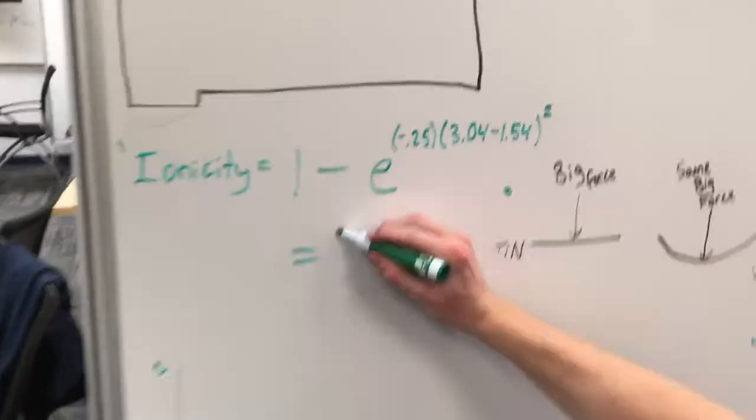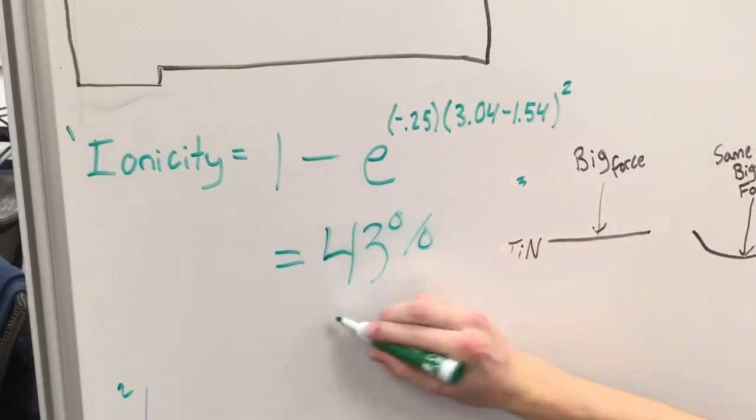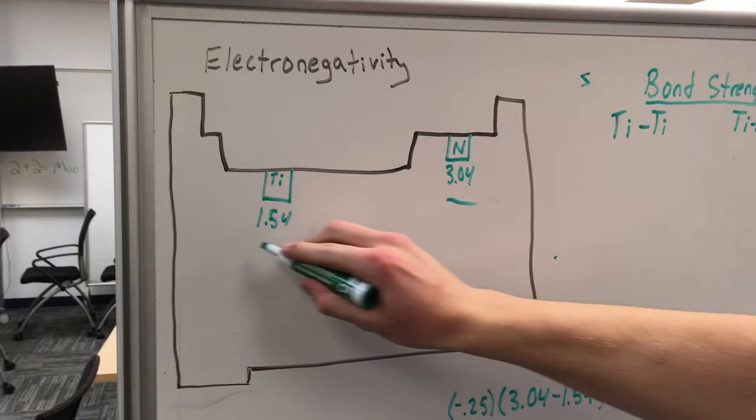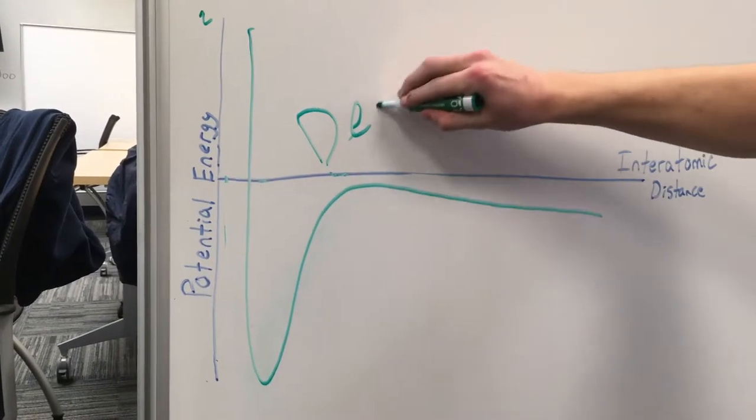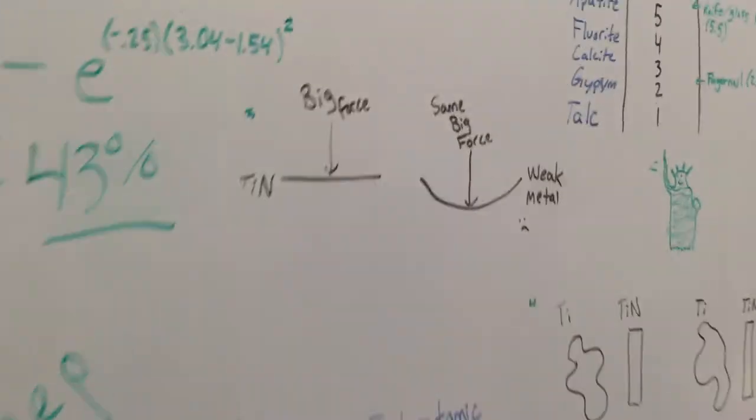Titanium nitride has covalent bonds with a strong ionic character of 43%. Its interatomic potential curve is very steep, resulting in a very high modulus of elasticity and low coefficient of thermal expansion. The high energy of these bonds also explains why this phase has such a high melting point.